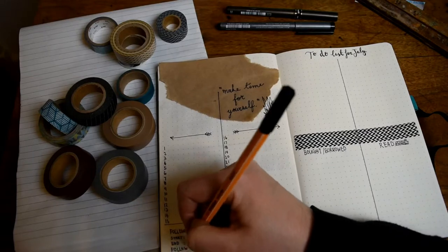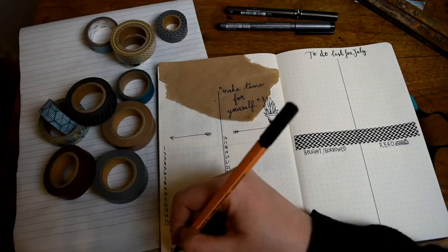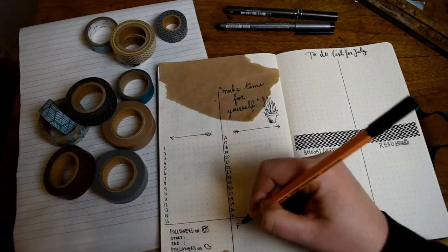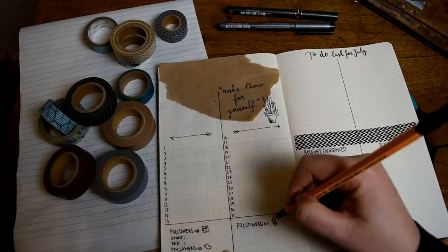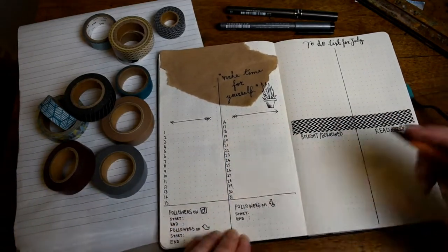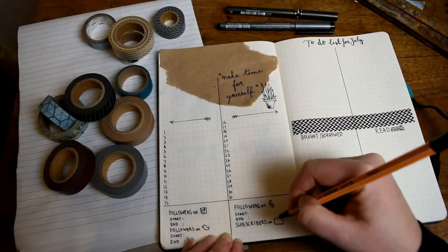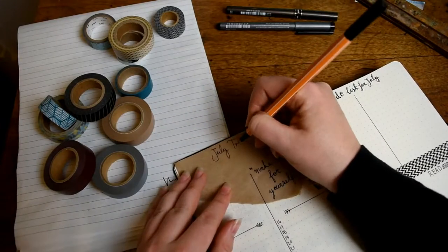On the bottom left I keep track of followers and subscribers across my four main channels. I tend to switch up what I keep track of in this box each month, but I always track Instagram at a minimum. You'll see here that I've also added Twitter, YouTube, and Tumblr this month.